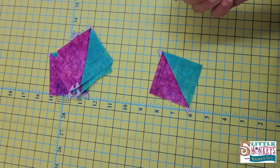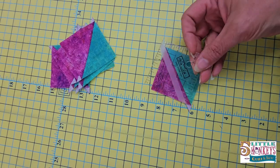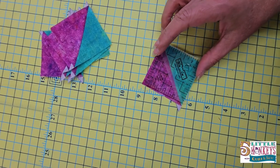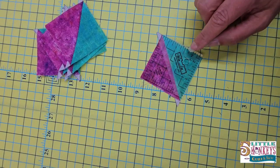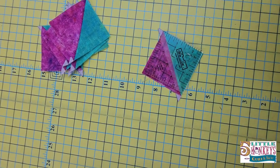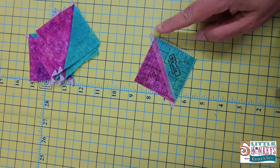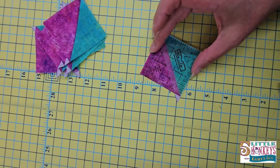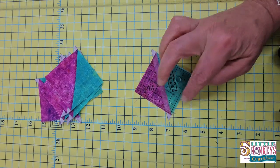The secret to this is that the block lock logo goes on the low side. So since we pressed toward the pink, the logo is going to go on the low side. The other thing to look for is that your dog ears are lining up with the groove. I'm going to trim these down to a perfect two and a half inch square.